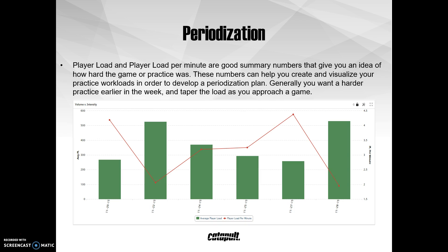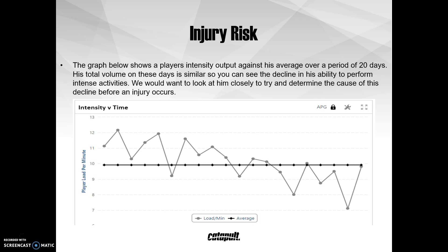Player load and player load per minute will give you a good idea of the volume and intensity of an entire practice when viewing the average for every athlete. We can use these to easily create an objective view of our periodization for any time period we want to examine — for example, looking at a week leading up to a game and what our periodization schedule looked like during that period. Another good use of Catapult metrics is to find signs of an injury before it actually occurs. These signs may present as a dramatic change in player loading, monotony in our training schedule, or a decreasing output for a similar task.